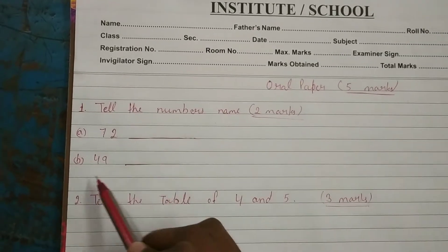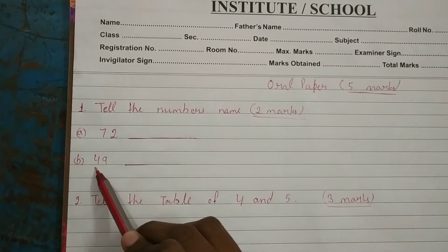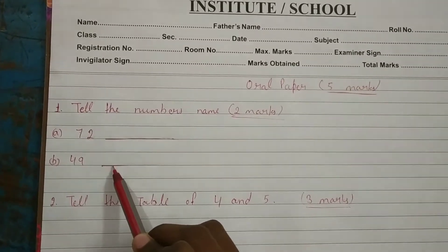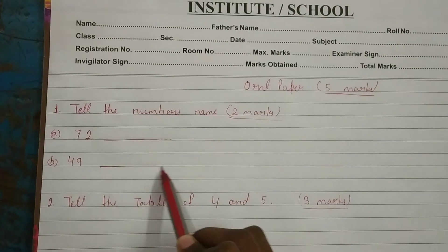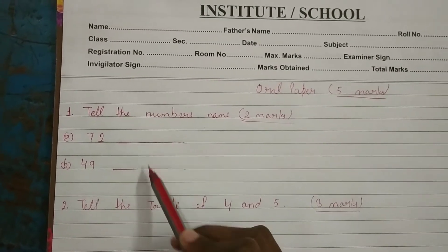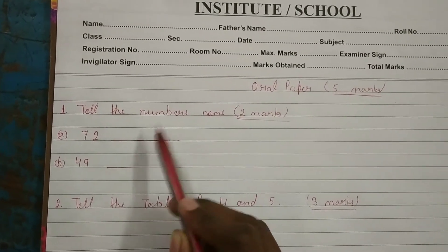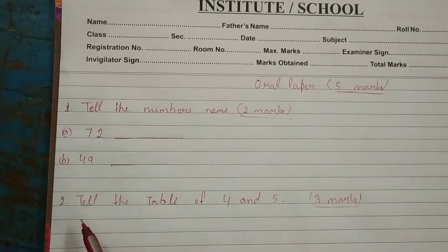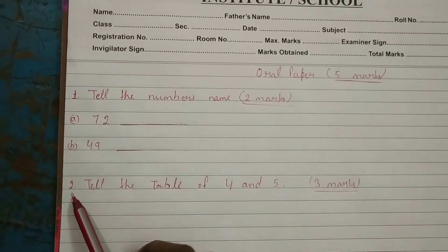Our second number is 49. What is it? 49. So you have written the spelling in English and then send me the number to the group.